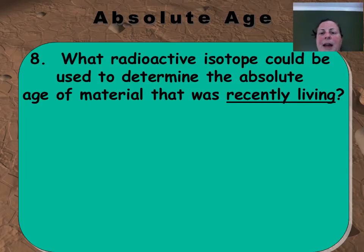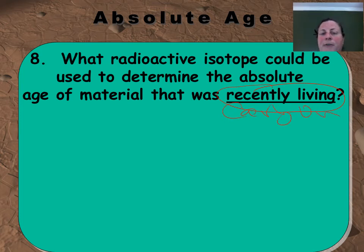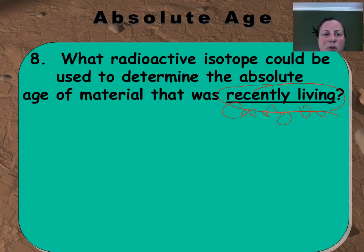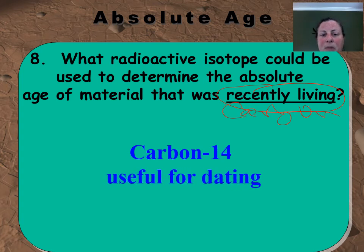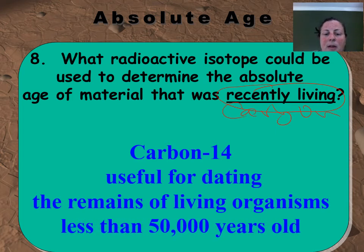So what radioactive isotope could be used to determine the absolute age of material that's recently living? All living things contain carbon. And if it's recently living — meaning we're looking at something less than 60,000 years old or so — we have to use something with a smaller half-life so that there's still carbon remaining. So carbon-14 is used for your recently living remains of living organisms. Less than 50,000 years old is most useful — after that point, you'd have so little left it might be hard to find or not really there anymore.